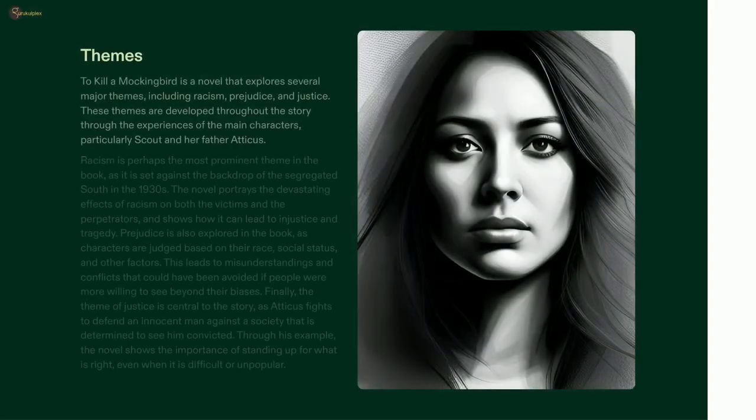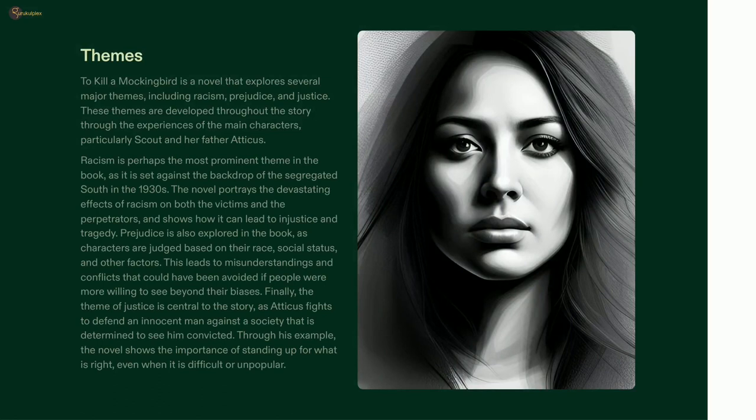Set in the 1930s in a small American town, To Kill a Mockingbird remains a timeless classic that has appealed to readers across generations. It delves into themes of racism, prejudice, and justice through the experiences of characters like Scout and Atticus Finch. The story illustrates the destructive influence of racism and how it can lead to misunderstanding and unfairness in society. It emphasizes the significance of upholding what is right, even if it is difficult or not socially accepted. Since its publication, To Kill a Mockingbird has retained its relevancy and is able to reach out to contemporary readers.